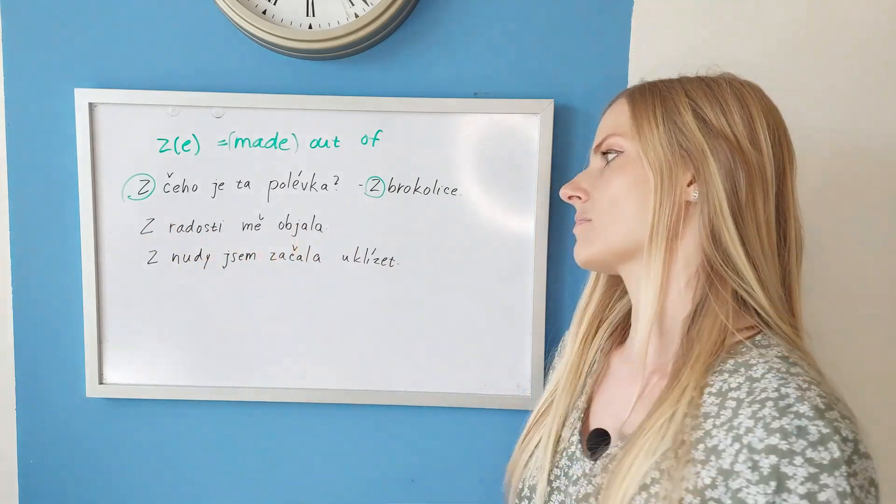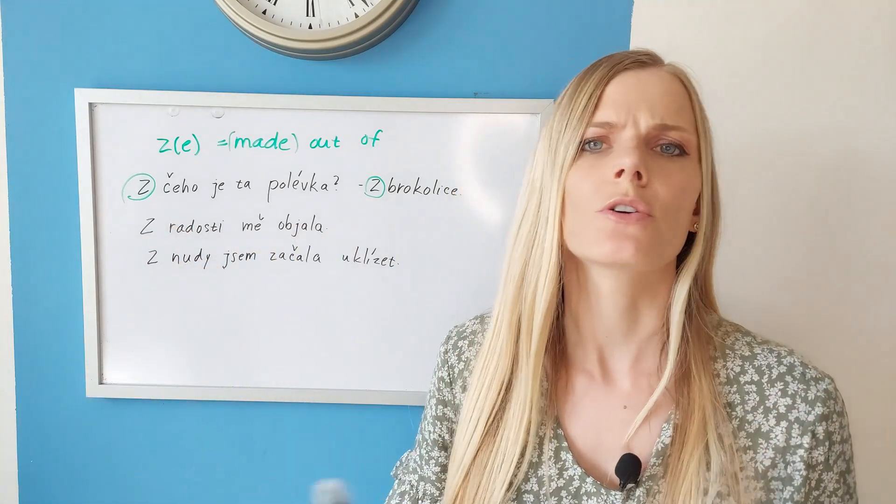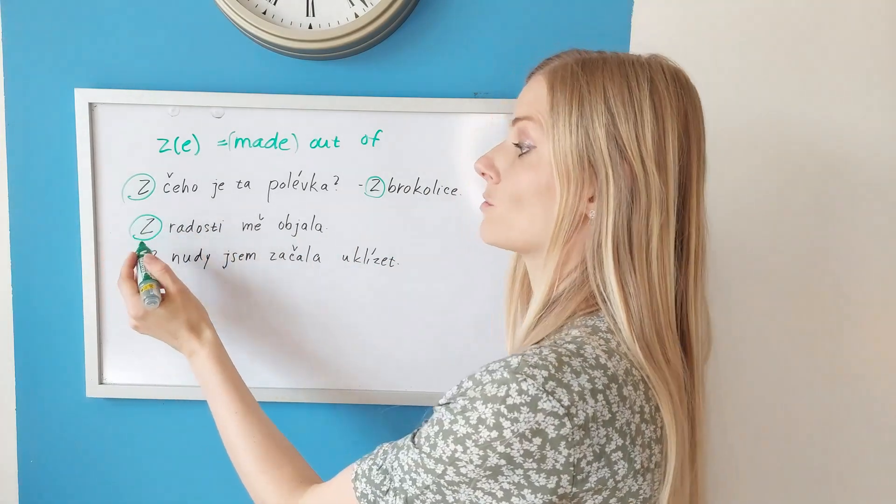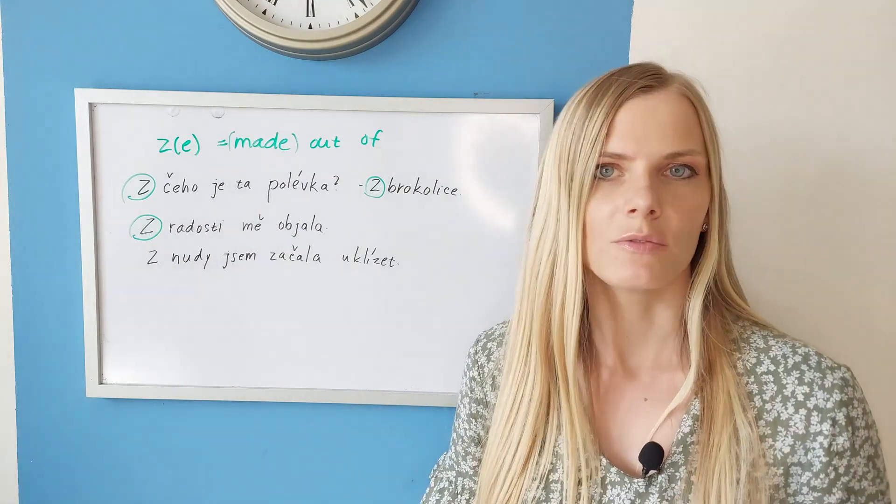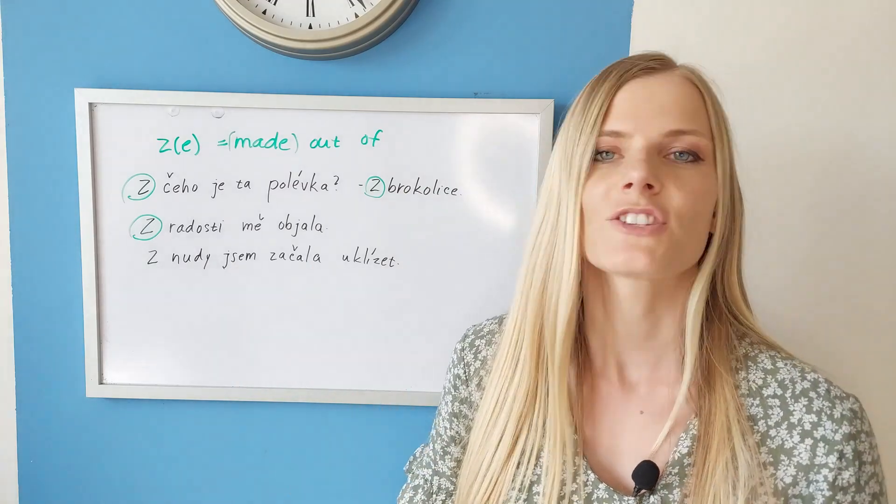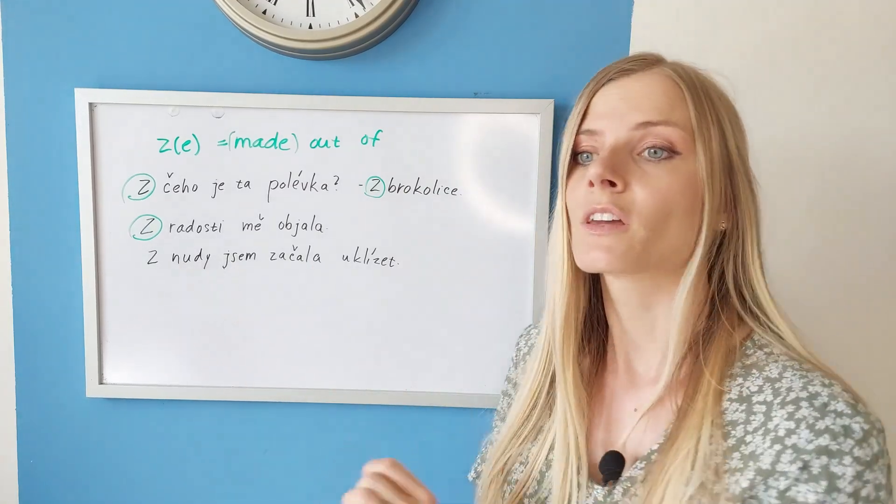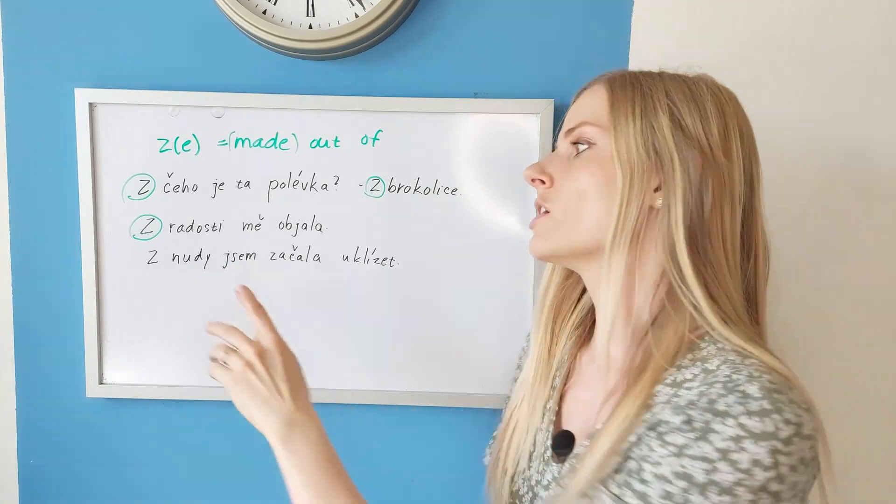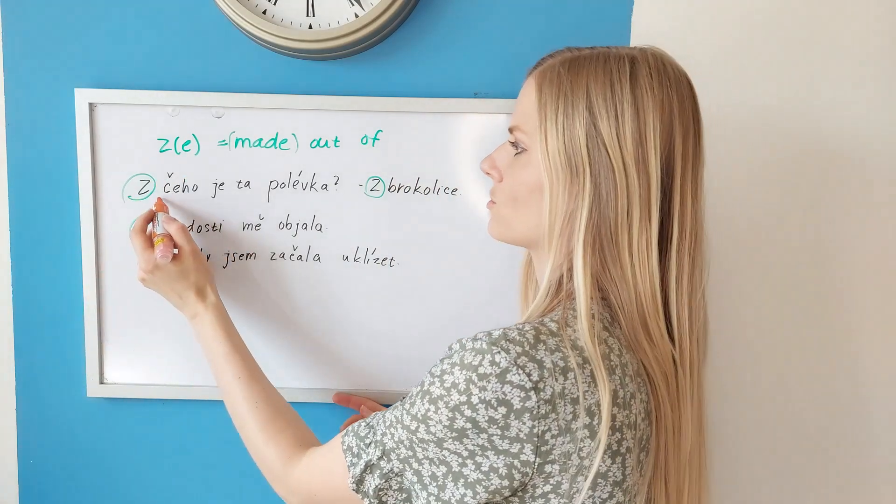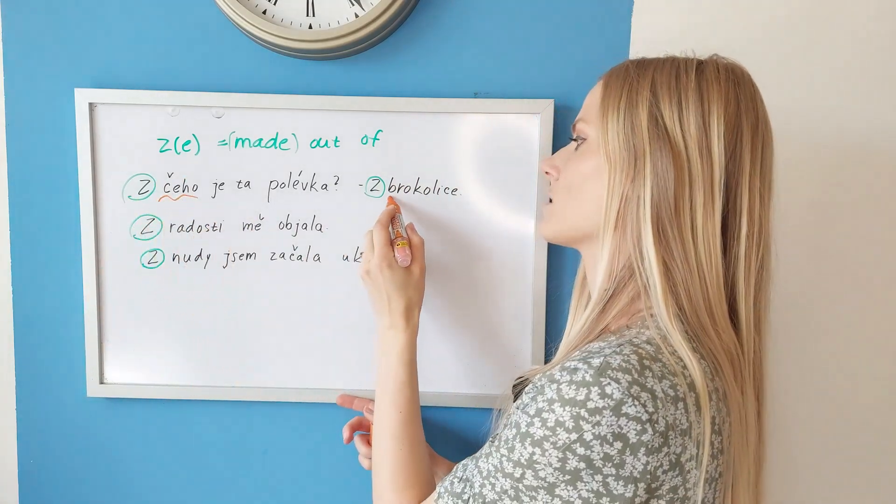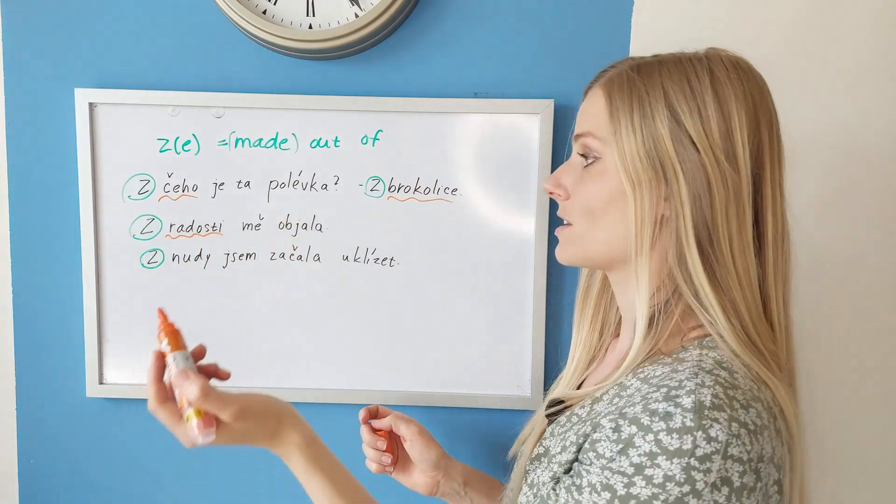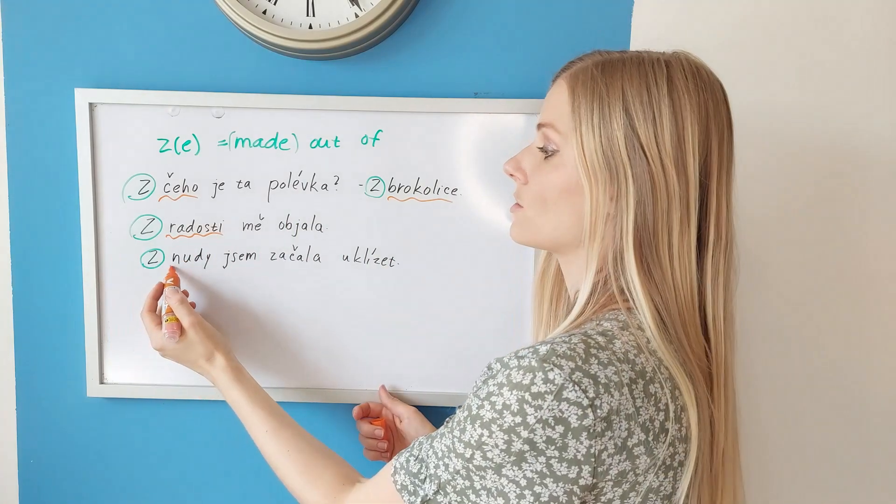Z radosti mě objala - She hugged me out of joy or happiness. Z radosti - radost becomes radosti - out of joy. We are speaking about an emotion. Z nudy jsem začala uklízet - I started cleaning out of boredom. Nuda is boredom. Z nudy - out of boredom. And remember the genitive case.